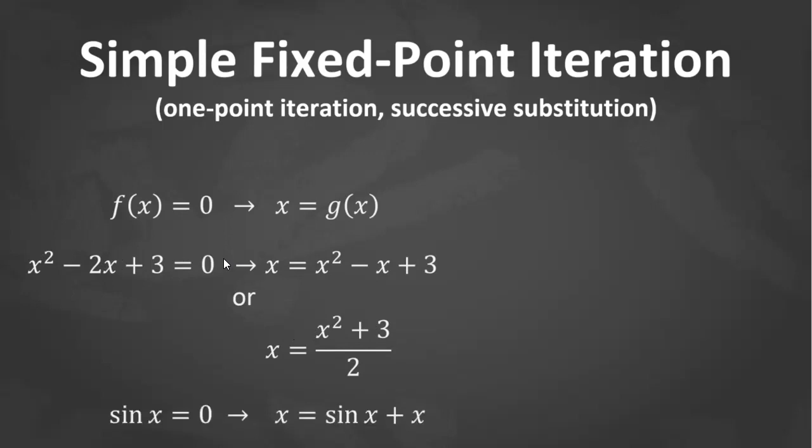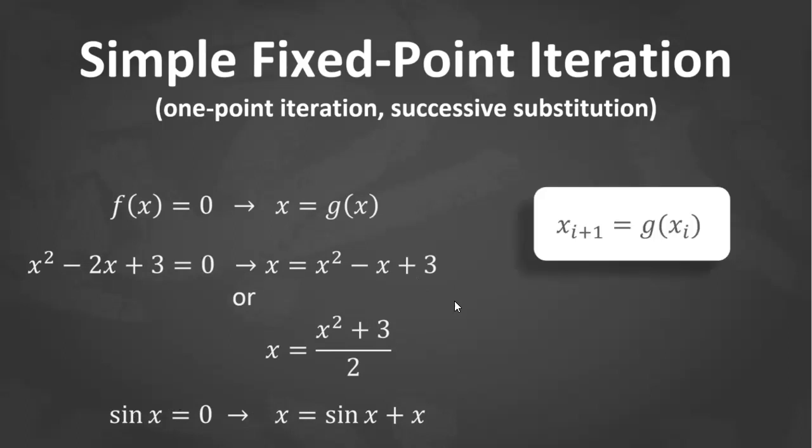Another example: if our f(x) is sine x, if our f(x) = 0 is like this, sine x = 0, then you just have to add x at both sides. So x = sine x + x. Through this simple manipulation, we now have a formula to predict a new value of x as a function of an old value of x. The x on this side is the old value of x, and this is the new value.